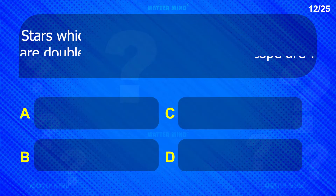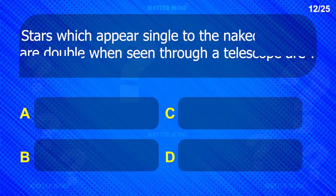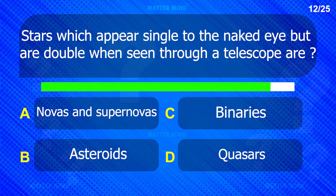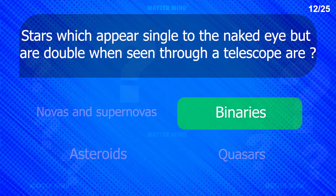Stars which appear single to the naked eye but double when seen through a telescope are — Binaries.